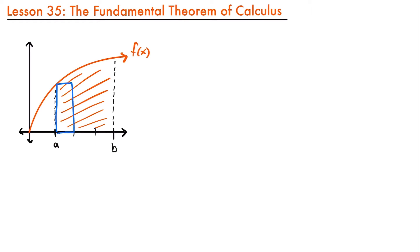We have seen how we can approximate this area by using rectangles, such as these right here. When we calculate the area of each of these rectangles and sum them together, we found an approximation of the area of that region underneath this curve. And notice that as we increase the number of rectangles, that approximation got better and better until it became equal to the area when n approached infinity.